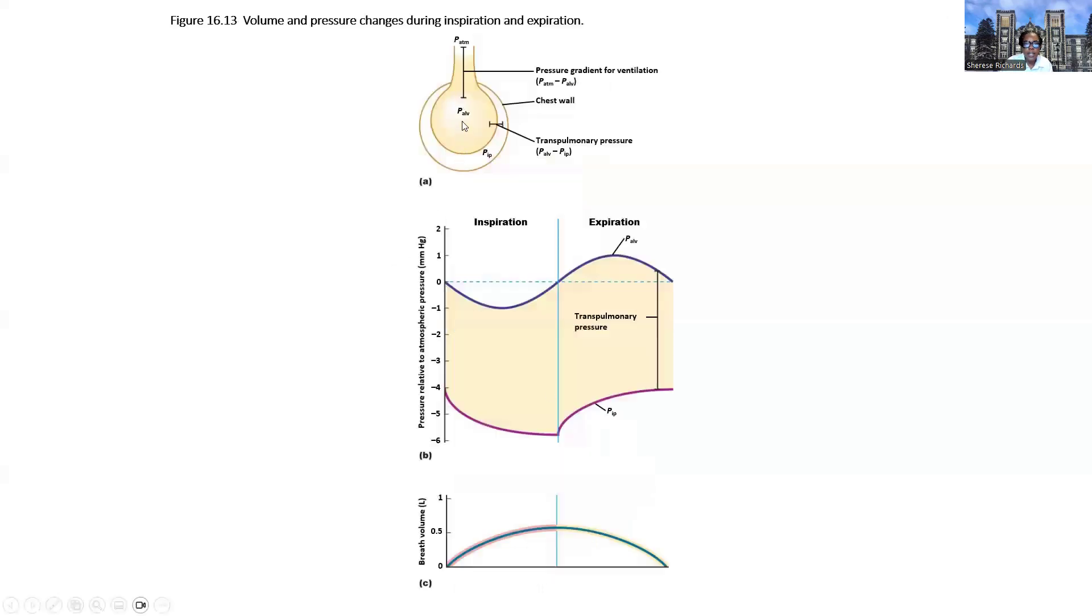So here's what that looks like. Here is the alveolus, the pleural cavity, so intrapleural pressure here, intra-alveolar pressure here, atmospheric pressure here. Across these two locations, these two values creates our gradient, atmospheric pressure minus alveolar pressure. And then across these two structures creates our distending pressure, our transpulmonary pressure, which is alveolar pressure minus intrapleural pressure. So all of these factors are needed. Both of these gradients are needed. This has to be negative four millimeters of mercury, and this has to be a gradient in favor of airflow, depending on the cycle, either internally or externally.